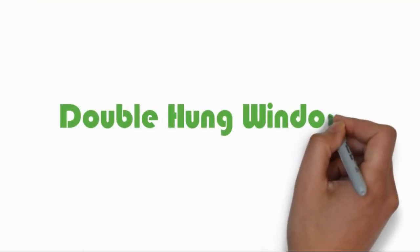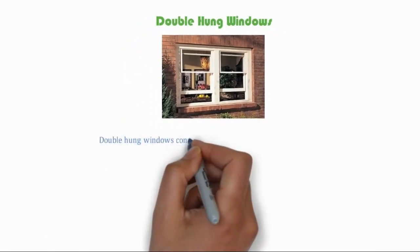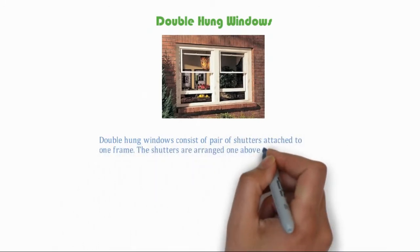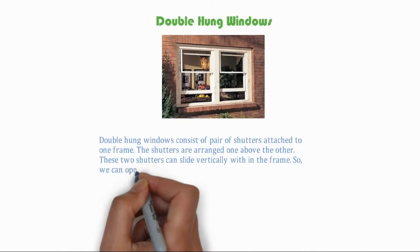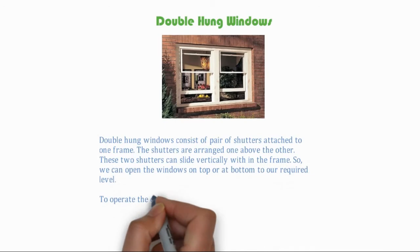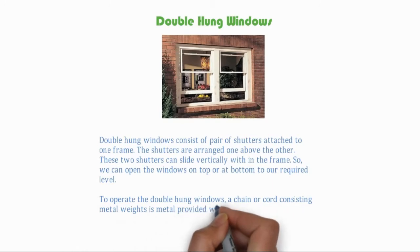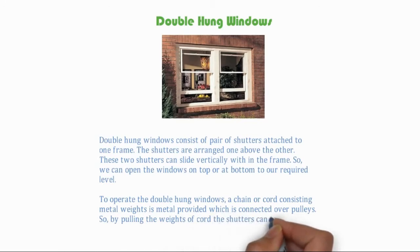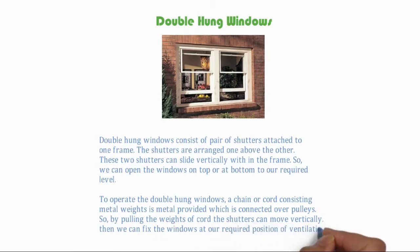Double hung windows consist of a pair of shutters attached to one frame. The shutters are arranged one above the other, and these two shutters can slide vertically within the frame, so we can open the windows on top or at bottom to our required level. To operate them, a chain or cord consisting of metal weights is provided, connected over pulleys. By pulling the cord weights, the shutters can move vertically, and we can fix the windows at our required position for ventilation or light.